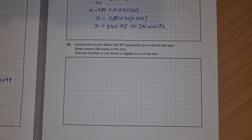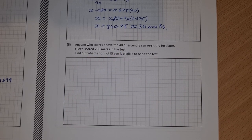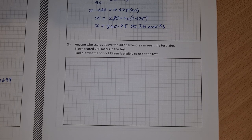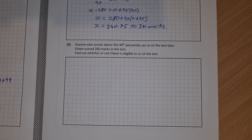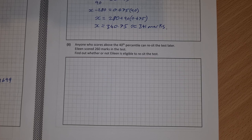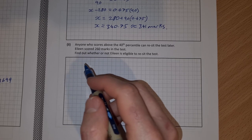Part 2. Anyone who scores above the 40th percentile can re-sit the test later. Eileen scored 260 marks in the test. Find out whether or not Eileen is eligible to re-sit the test. I've seen a few ways to do this one. Until the marking scheme comes out it'll be difficult to know what exactly they were looking for, but this is my take on it.